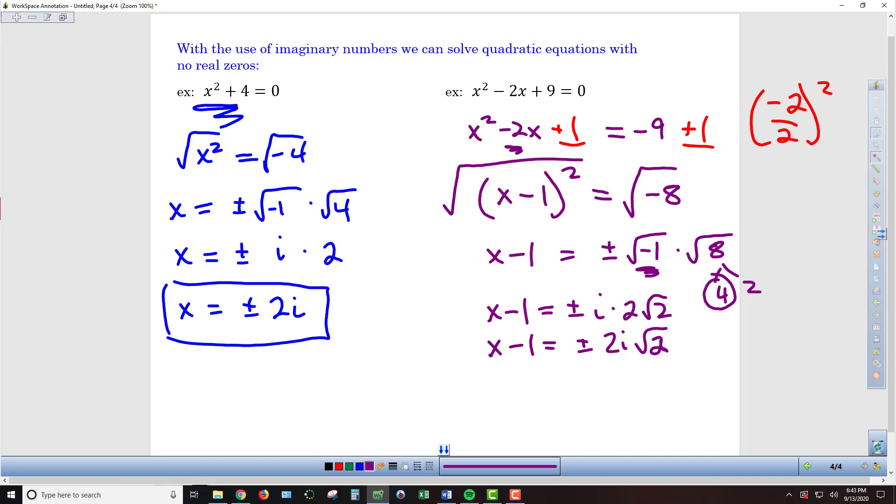My last step is to just add 1 to both sides. That of course is not a like term with 2i√2. So I'm just going to leave my answer as 1 ± 2i√2.